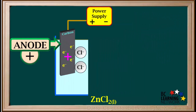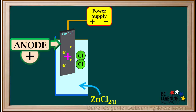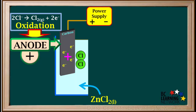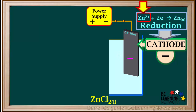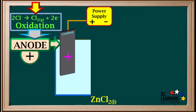Now we'll have a look at the anode and see what happens. Each chloride ion will lose one electron and change into a chlorine atom. The two chlorine atoms then join to form a molecule of Cl2, or chlorine gas. The process taking place at the anode can be summarized by the equation 2Cl- gives Cl2 gas plus two electrons. The process of chloride ions losing electrons is called oxidation, and we see that oxidation of chloride ions to chlorine takes place at the anode.